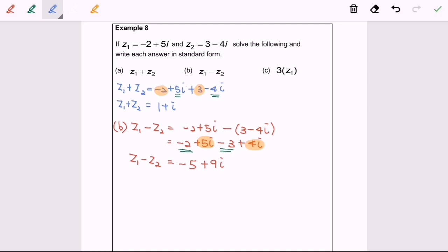Now kindly refer to example 8c, which is 3 multiplied with z sub 1. So we will have 3 multiplied with negative 2 plus 5i. Kindly expand.